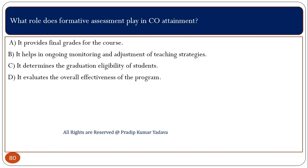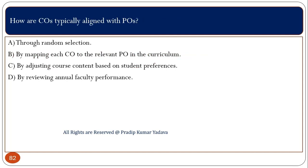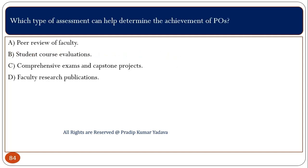What role does formative assessment play in CO attainment? There is formative assessment and summative assessment. Formative assessment basically helps in ongoing monitoring and adjustment of teaching strategy. How do COs typically align with POs? By mapping each CO to the relevant PO in the curriculum. Which type of assessment can help determine the achievement of POs? Basically, this is done by comprehensive exams and capstone projects. Why is it important to review and update CO and PO regularly? The correct option is D: to reflect changes in industry standards and educational practices.